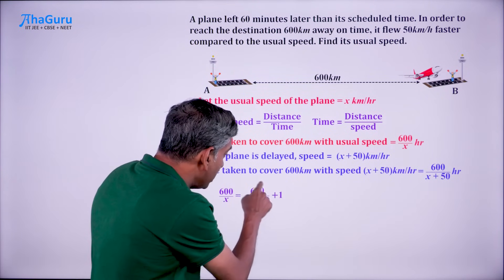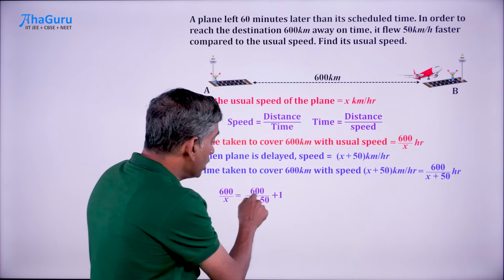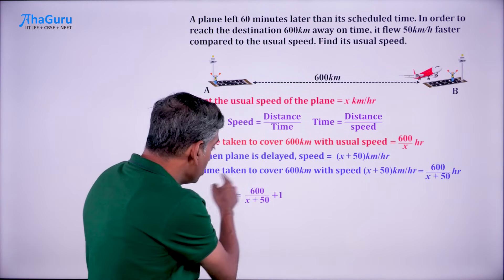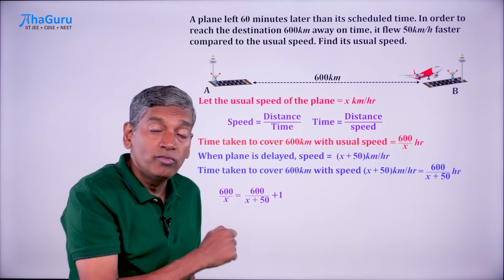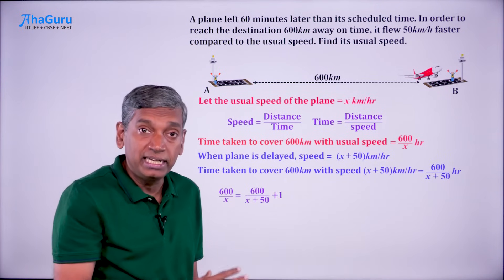We can say that 600 by x is 600 by x plus 50 plus 1. This is the time taken when it is flying faster, but because of the delay of one hour, this is the total time, but that is the same as the usual because it reaches the destination on time. This is how we formulate the equation.